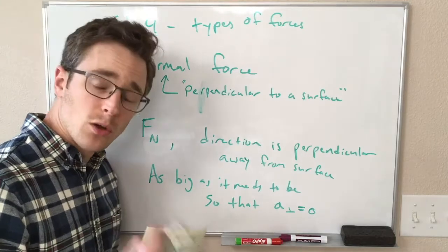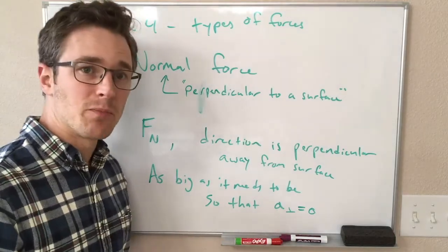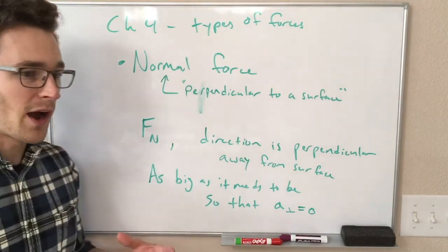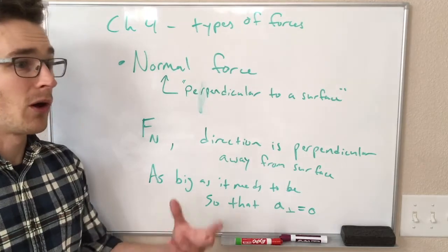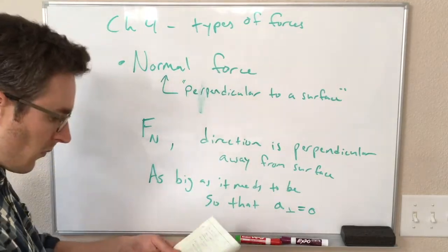This force is as big as it needs to be so that the acceleration is equal to zero. If we need to know how big this is, we can always figure it out from context from the other forces on our free body diagram. So the normal force is always something we figure out the value of from other forces in the problem that we do know.